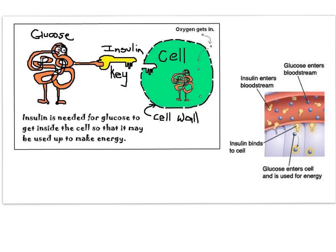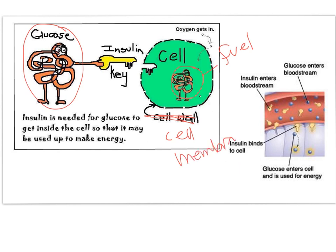Let's look at insulin first. Glucose, the molecule, is too big to just diffuse into a cell. Remember, this is where glucose is going to be burned as a fuel. This is a cell membrane — not a cell wall. We use glucose as a fuel, but glucose cannot just get into the cell on its own.